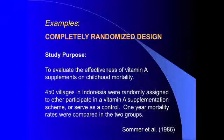A classic study showed the effectiveness of vitamin A supplementation in reducing childhood mortality: 450 villages in Indonesia were randomly assigned to either participate in vitamin A supplementation or serve as a control, and one-year mortality rates were compared in the two groups. Because of statistical inefficiency compared to randomizing individuals, it's always important to justify the reason for adopting this design. In this case, the investigator said it would have been politically impossible to randomize some children in a village to vitamin A but not others. The trial was both statistically and clinically significant and began a long series of future trials looking at the effect of vitamin A on maternal mortality.